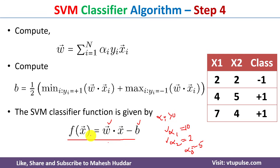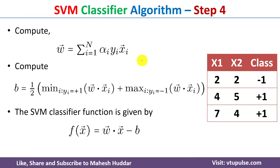Once we have the final hyperplane equation — using the weight vector, bias, and support vectors — we can use this equation to classify any new example into one of the two classes: +1 or -1.